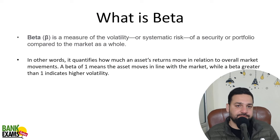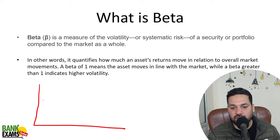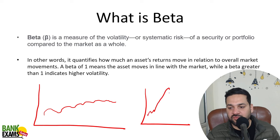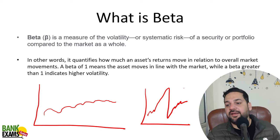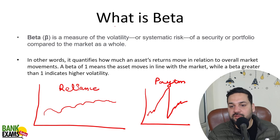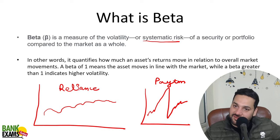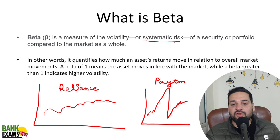First of all, what is beta? Beta is a measure of volatility. For example, the stock price of Reliance Industries is moving like this, while the stock price of Paytm is moving like this. So what we are going to say is the beta of Paytm is high as compared to the beta of Reliance Industries. So beta is a measure of volatility or systematic risk.